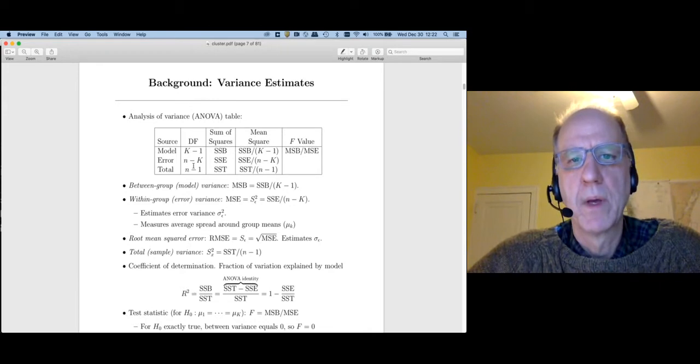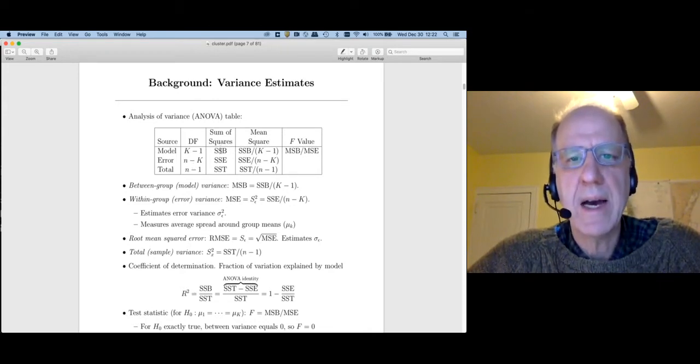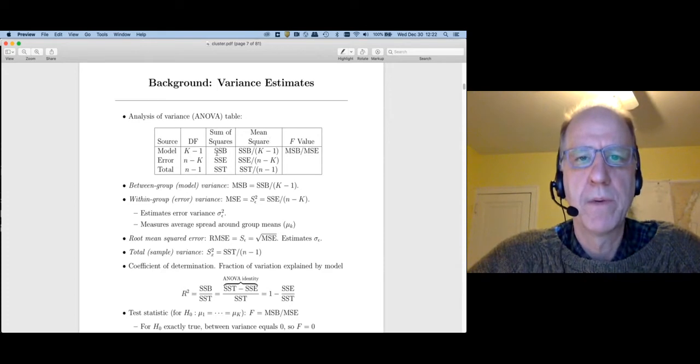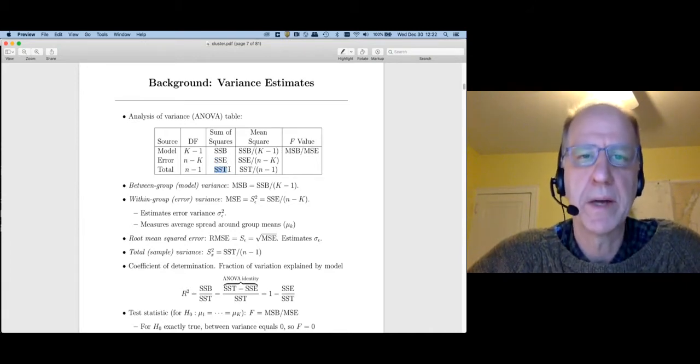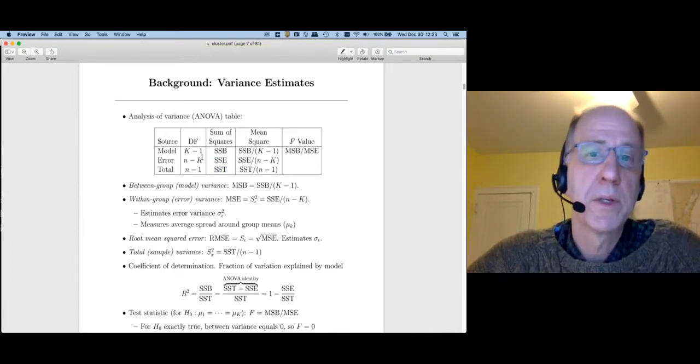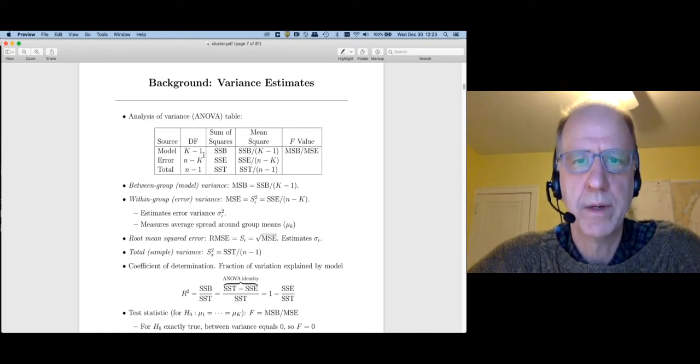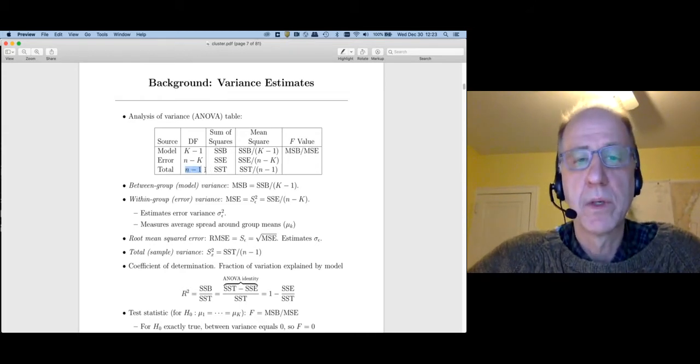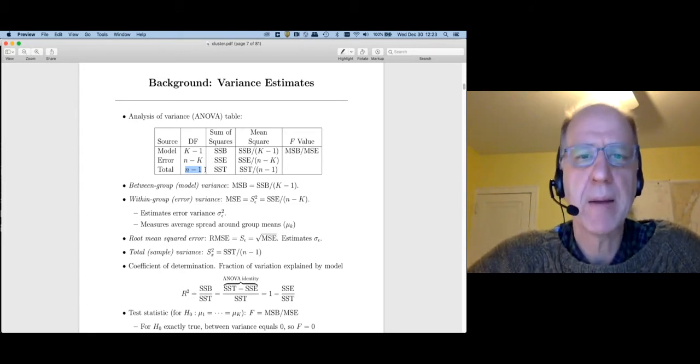Now with an ANOVA table, we usually add vertically and we divide across. If we think about our sums of squares, we take between plus within, we get the total. That's just the ANOVA identity. Likewise with the degrees of freedom. So k minus 1 plus n minus k equals n minus 1. So the way I like to think about this is with the total model, I have to estimate one thing, the grand mean, and the remaining observations can be used to assess the variance.